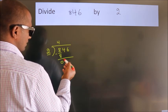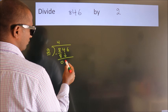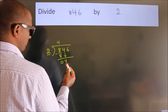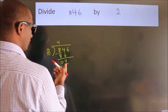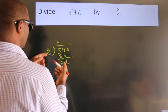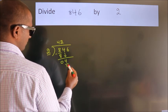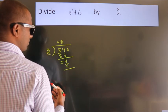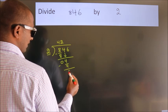After this, bring down the beside number. So 4 down, so 4. When do we get 4? In 2 table, 2 2s 4. Now we subtract, we get 0.